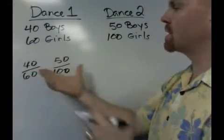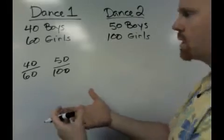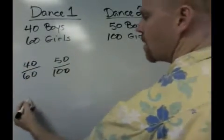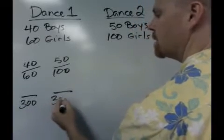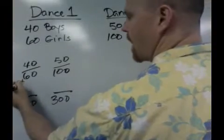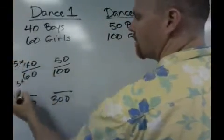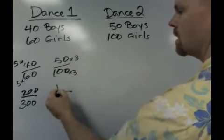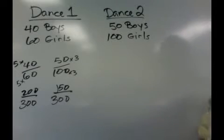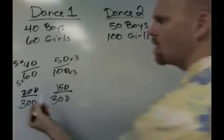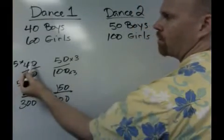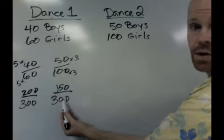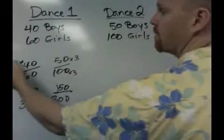If we're going to compare and see if the second dance really did increase the rate of participation of the boys, one way to compare ratios is to get a common denominator. In this case, 300 would be a nice, handy common denominator. So 60 times 5 is 300, and 40 times 5 is 200. And over here, 100 times 3 is 300, so 50 times 3 is 150. The 200 stands for boys and 300 stands for girls. Over here, 300 stands for girls and 150 stands for boys.